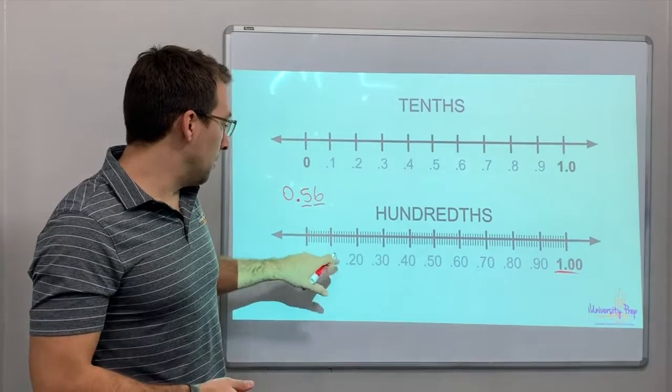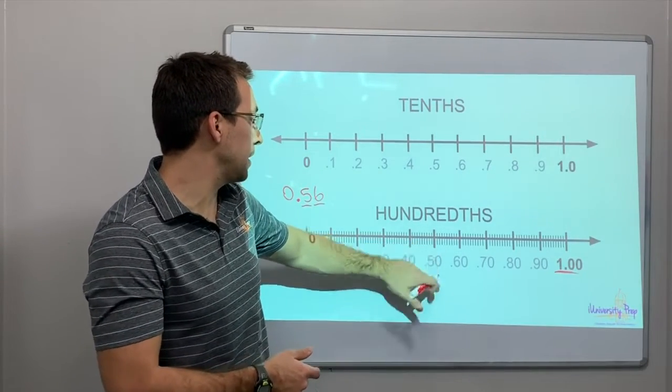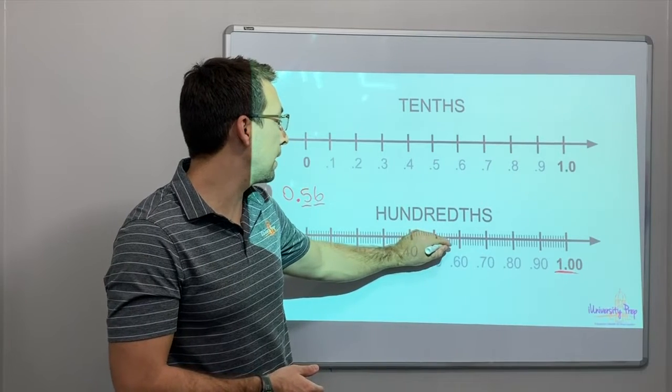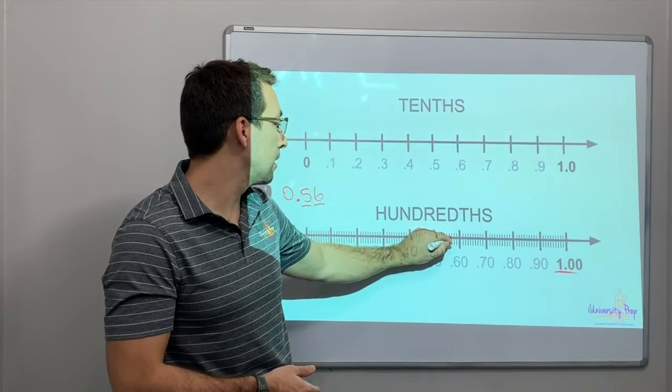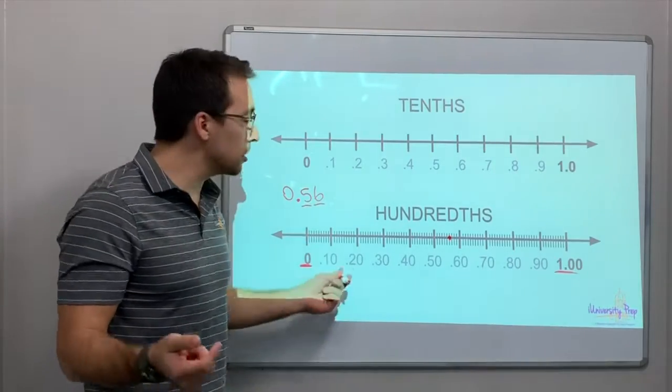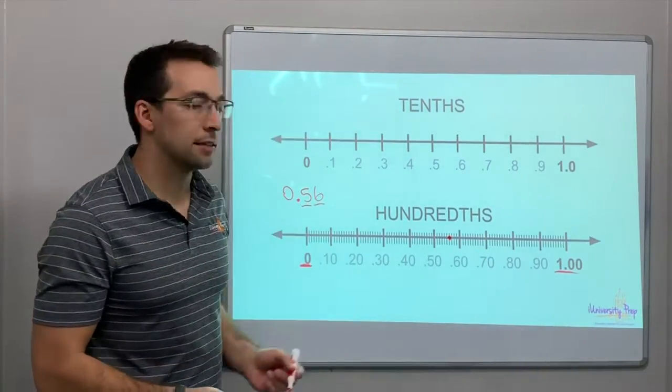Check it out. Point ten, twenty, thirty, forty, fifty, and then let's count six. One, two, three, four, five, six. There it is. Fifty-six hundredths shows on the number line like this.